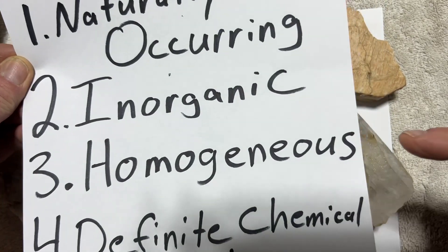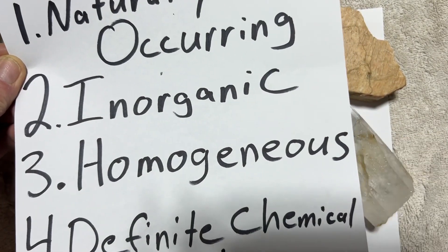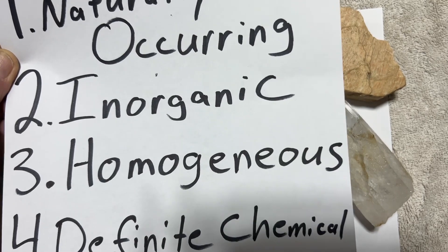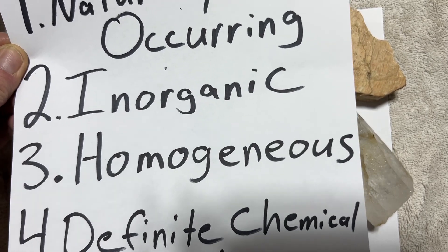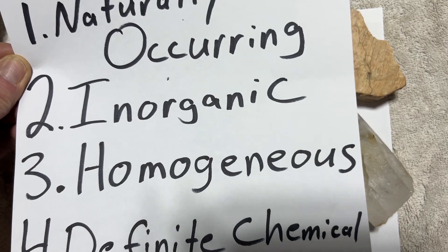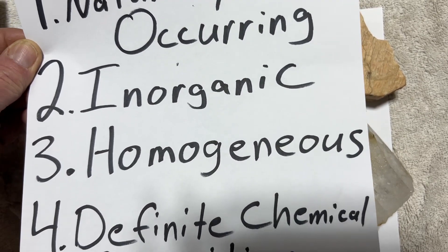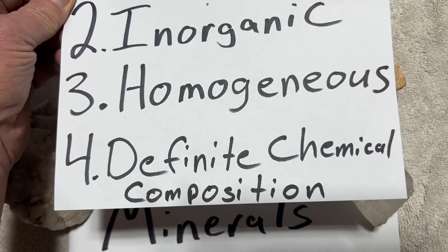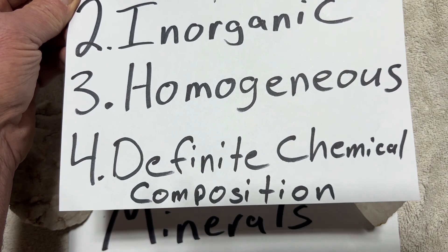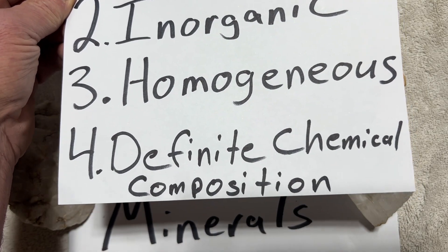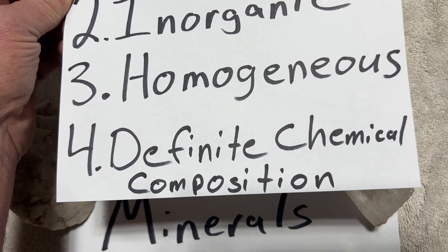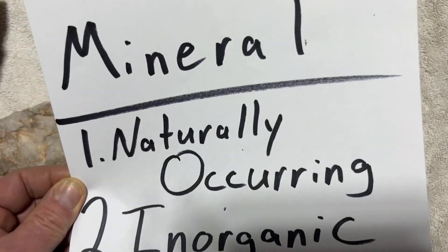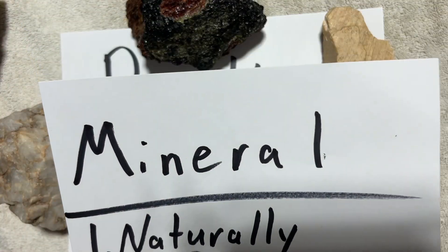The third criteria is that they're homogeneous, meaning that every piece of that sample is made up of the same ingredients. And then there's definite chemical composition, meaning every piece of that sample has the same chemical composition. Those are the criteria for a mineral.